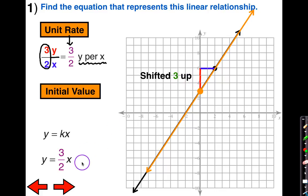Because it shifted 3 up, I am adding 3 to the original equation. So my equation is y equals 3 halves x plus 3. The only difference is the fact that there's a shift of 3 upwards.